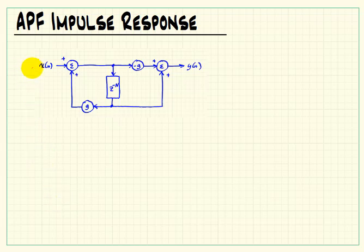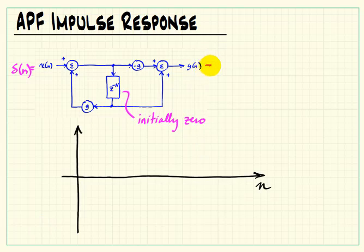Here we have an all-pass filter and we're interested in getting the impulse response for this filter. So we apply a delta function for the input x and assume that the delay line has been filled with zero values. The output in this case would be the impulse response h of n.